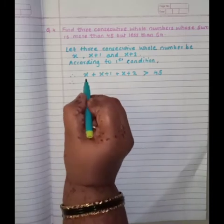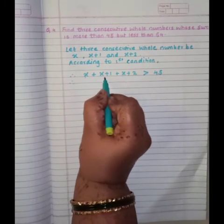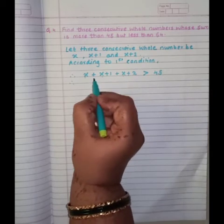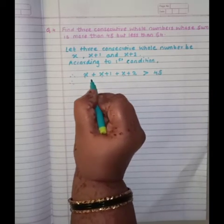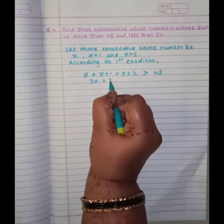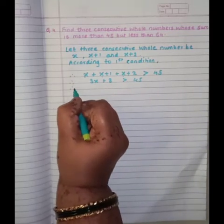Now, we will solve this. Now see here, X, X, X. So here total 3X are there. So X plus X plus X is what? 3X plus 1 plus 2 is 3 more than 45.